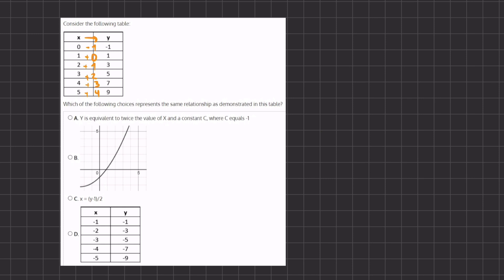A states y is equivalent to twice the value of x. So y is equivalent to 2x, or y = 2x plus a constant where c equals -1. So y = 2x - 1. This is our equation.